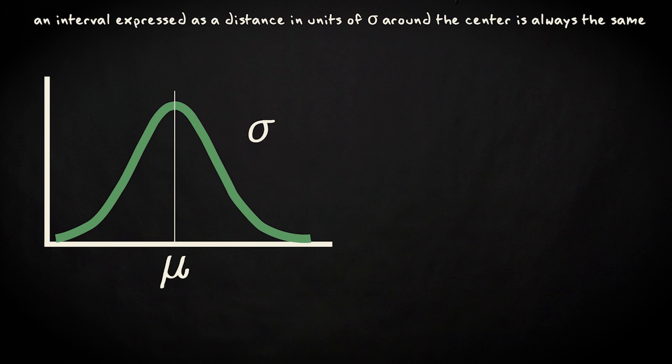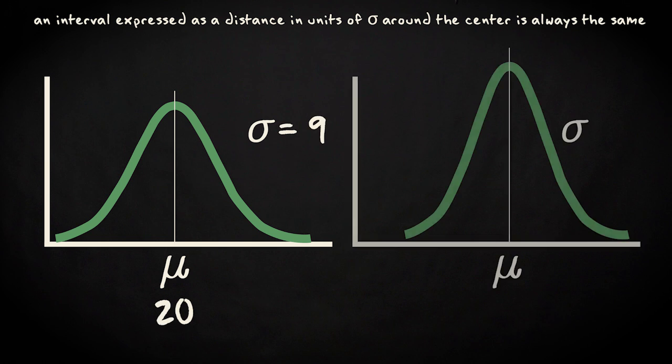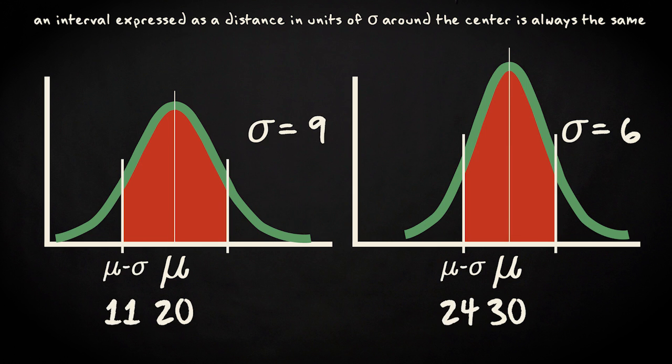Here you have a curve with mean 20 and standard deviation 9. And here's a curve with mean 30 and standard deviation 6. For both PDFs, the area between the mean minus 1 standard deviation and the mean plus 1 standard deviation is shown. And in both cases, the surface area under the PDF is 0.68.